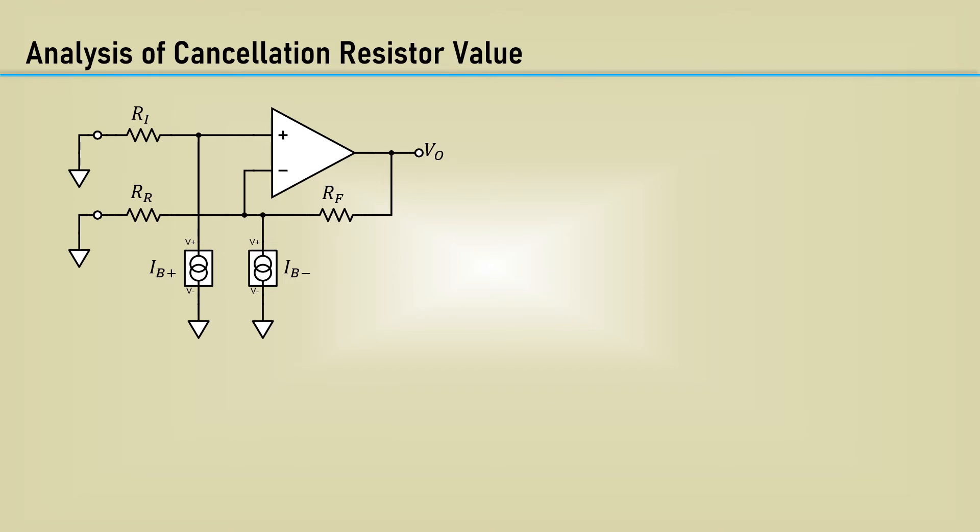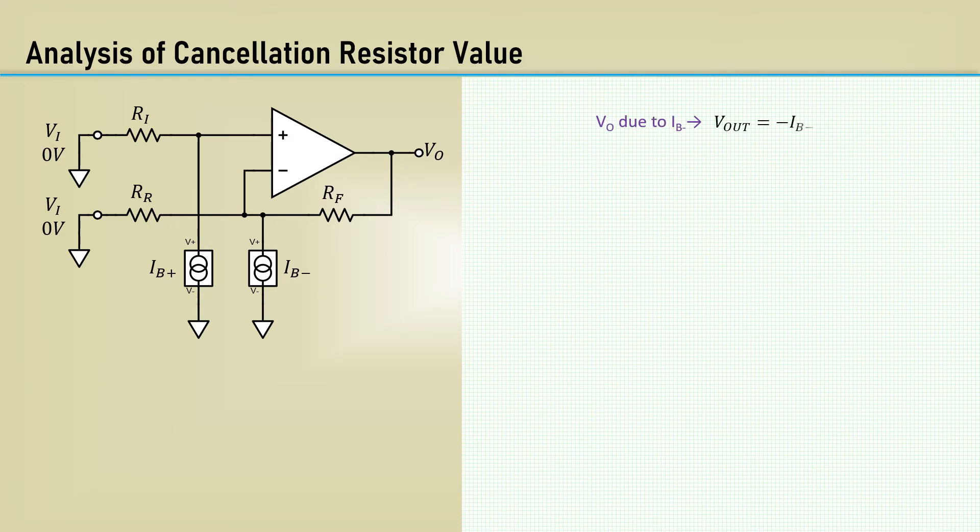Moving forward, we will do the analysis to calculate the value of the cancellation bias resistor. Here's a schematic of an op-amp with input bias current source models for both the inverting and non-inverting inputs. This can be viewed as an inverting amplifier or a non-inverting amplifier. For sake of the analysis, both inputs are grounded. From the current-to-voltage converter example, we know the contribution to Vout due to the inverting input bias current, negative IB minus times RF. RI causes the positive input to be offset negative by IB bias plus, plus RI. This is amplified by the non-inverting gain.